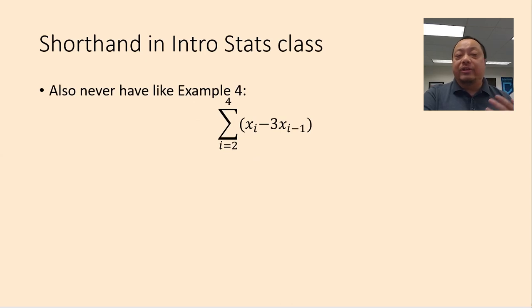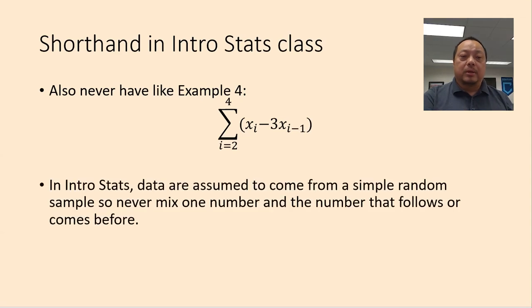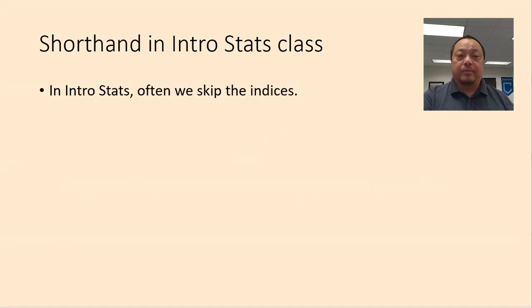We'll also never have a situation like example 4 where data of different index values are mixed together. That is because in the intro stats, data assumed to come from a random sample, so we never analyze what happens when one number follows another in some sort of orderly manner. In a more advanced stats class, yes. In intro stats, no. Therefore what we do in intro stats sometimes is we skip the indices.